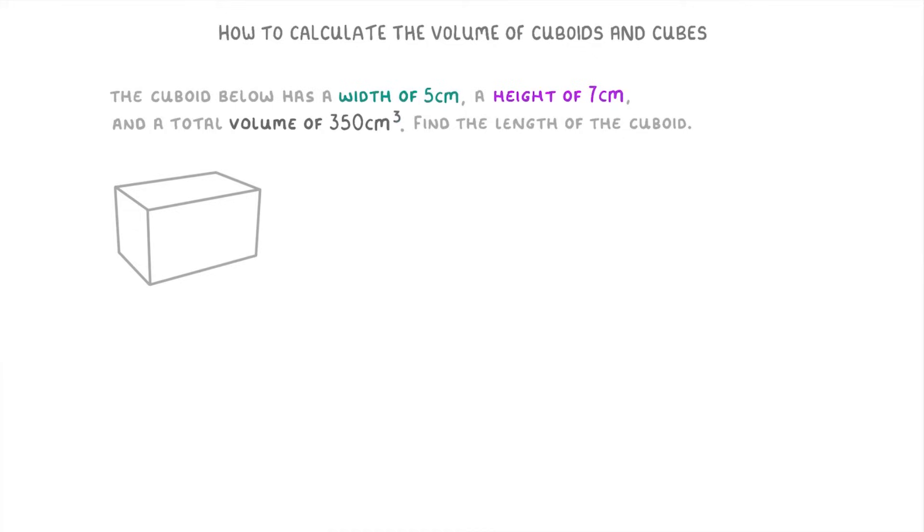The first thing we're going to want to do here is write out the equation for the volume of a cuboid. So V equals L times W times H.